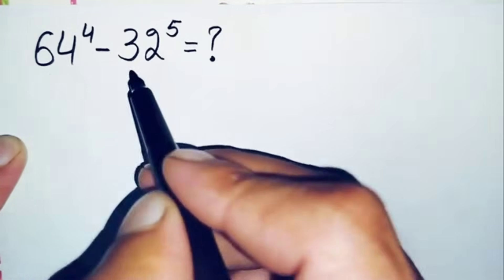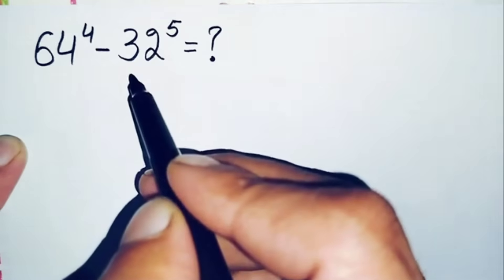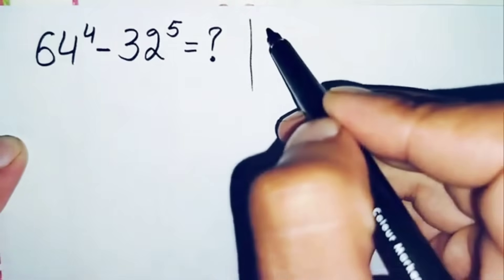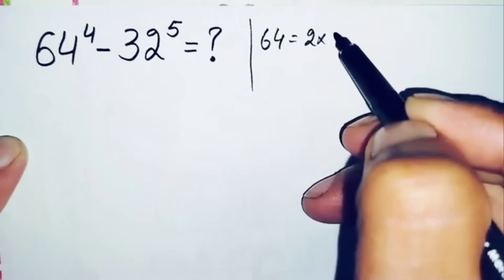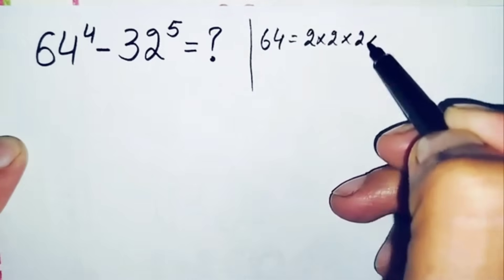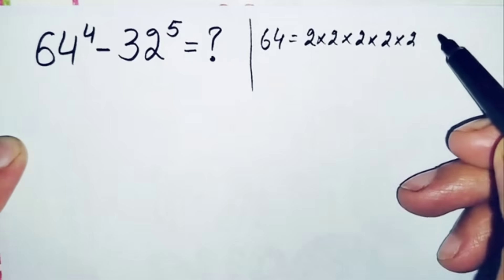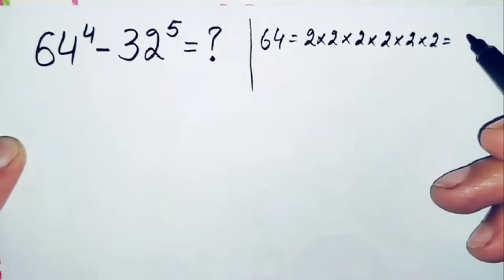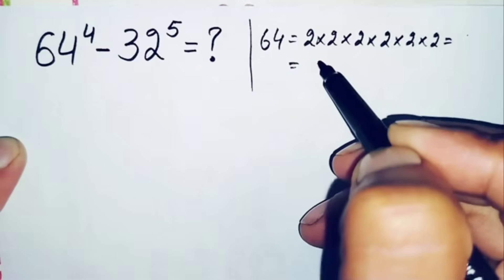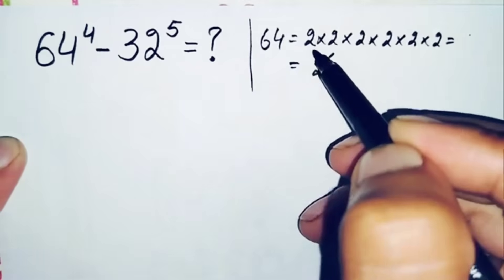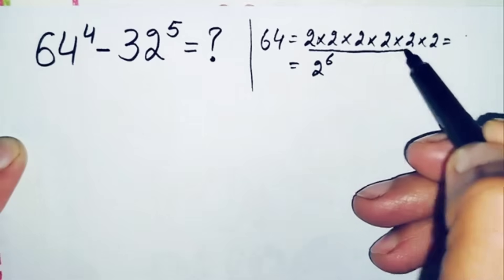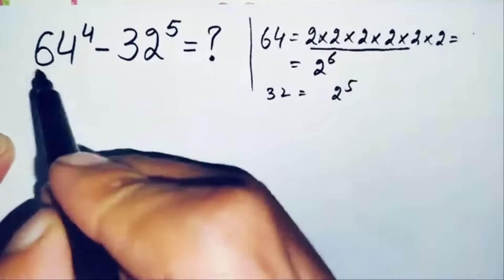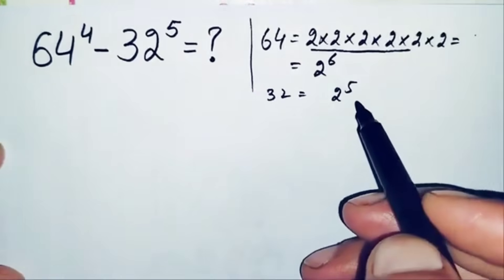First, we will try to change these two bases, 64 and 32, to their exponential form having base 2. We can write 64 as 2 multiplied 6 times, so 64 equals 2 raised to power 6. And multiplying 2 five times gives 32, so 32 equals 2 raised to power 5. We will replace 64 with 2^6 and 32 with 2^5.